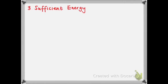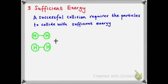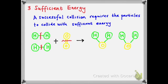The third aspect of the collision theory states that particles must collide with sufficient energy. A successful collision requires that the particles collide with each other with sufficient energy. Consider two hydrogen molecules reacting with an oxygen molecule — the classic reaction of hydrogen with oxygen to form water. For this reaction to take place, we need a breaking of bonds: the bonds between the hydrogen atoms must break and the double bond in oxygen must break, and that requires energy. Once those bonds are broken, the reaction can proceed and we form two water molecules. That sufficient energy is what we know as activation energy — the energy to get the reaction going.